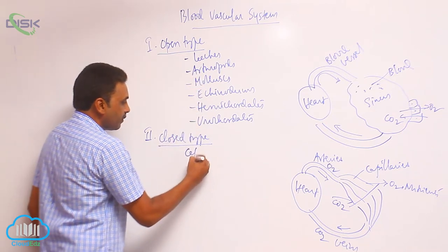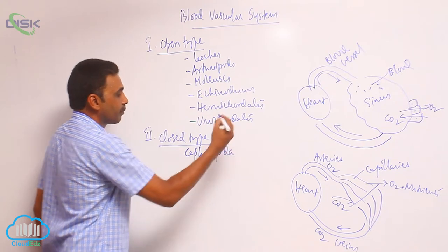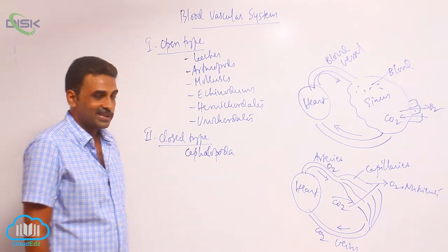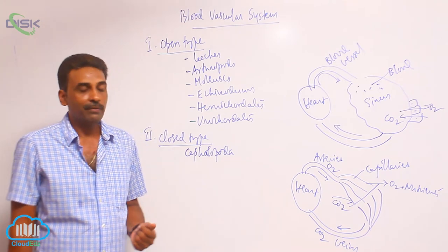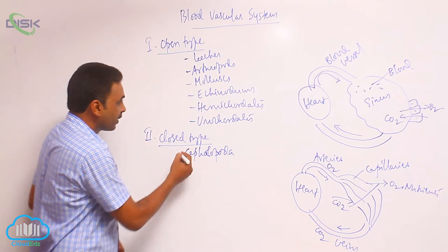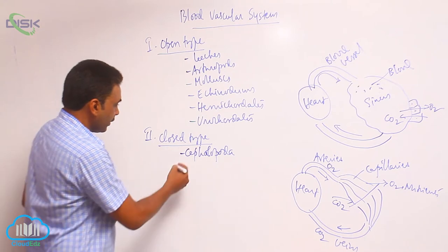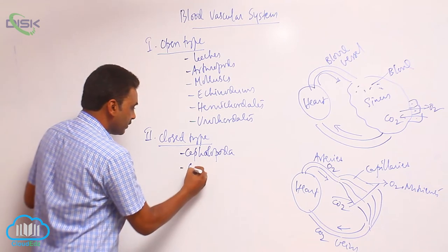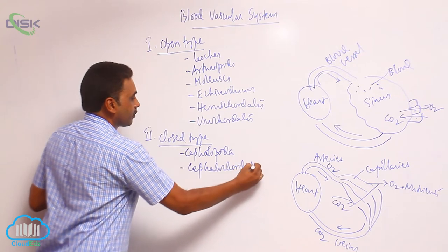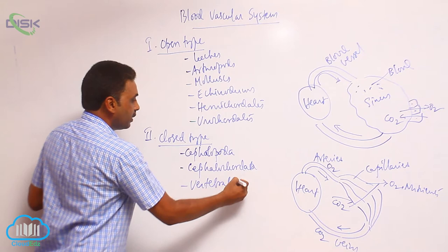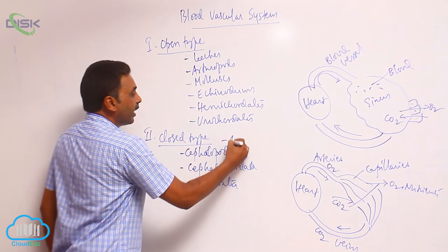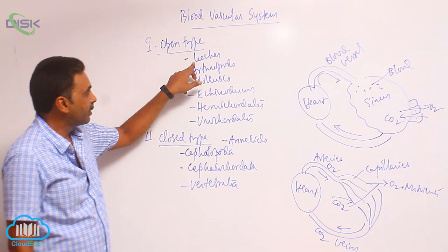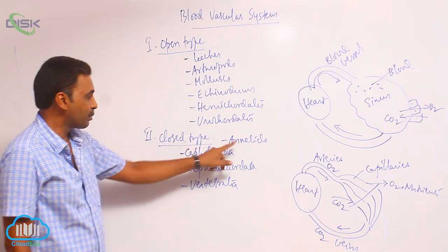The closed type is seen in cephalopoda — the most advanced molluscs, including squids and cuttlefishes, where an advanced circulatory system is present. It is also seen in cephalochordates, vertebrates, and all other annelids. Leeches contain the open type; all other annelids except leeches show the closed type of blood vascular system.